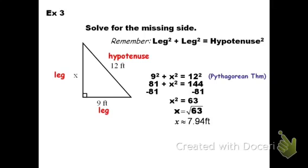When you round, make sure you use the approximation symbol — it doesn't say x equals 7.94, it says x is about 7.94. Now there's actually another use for the Pythagorean Theorem: not only can we use it to find the missing side of a right triangle, we can also use it to figure out if a triangle — given all three sides — is a right triangle.